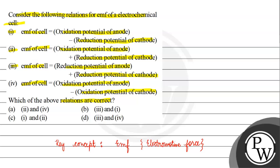So our third statement is incorrect. Fourth statement: EMF equals oxidation potential of anode minus oxidation potential of cathode. Oxidation potential of anode is correct, and we subtract oxidation potential of cathode, so this is also correct. Therefore, my correct answer is Option A — the 2nd and 4th statements are correct. I hope you understood it well. Thank you and all the best.